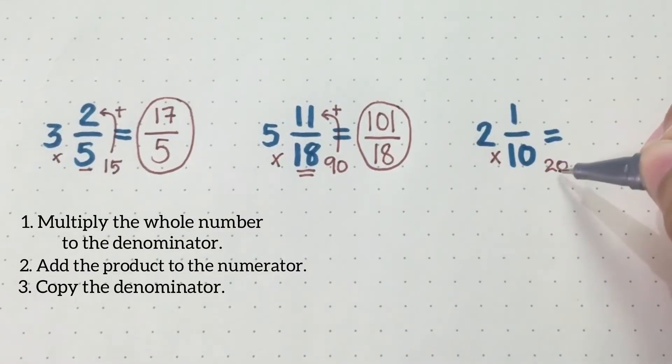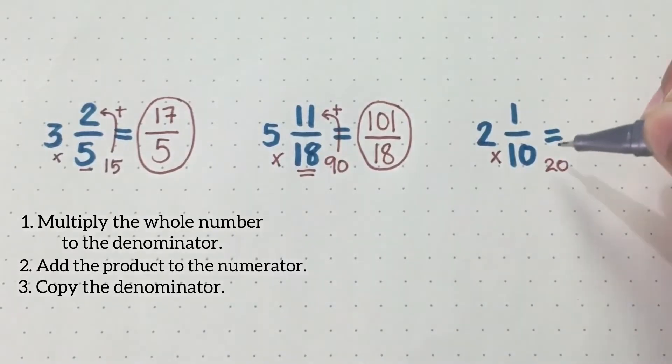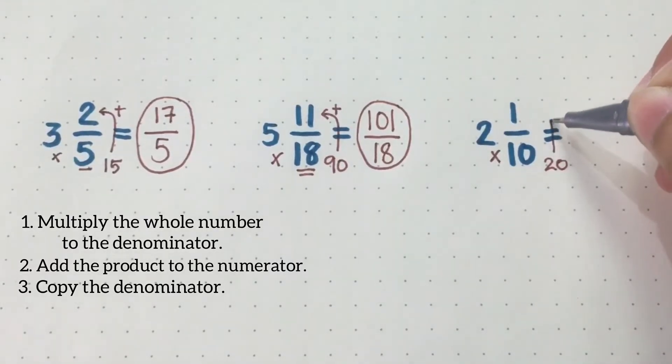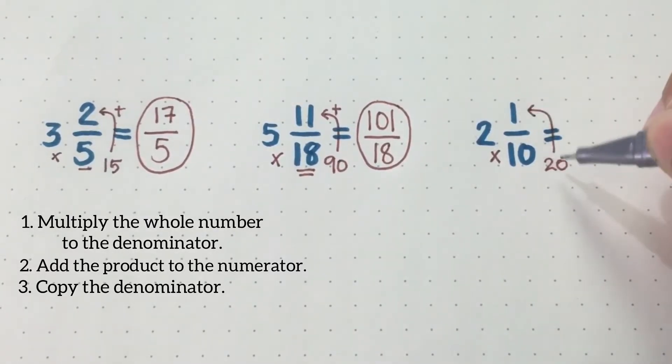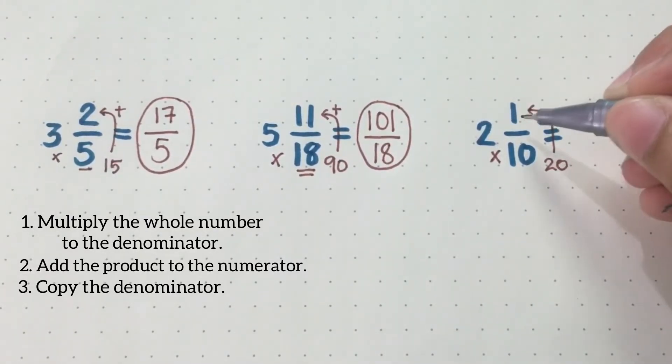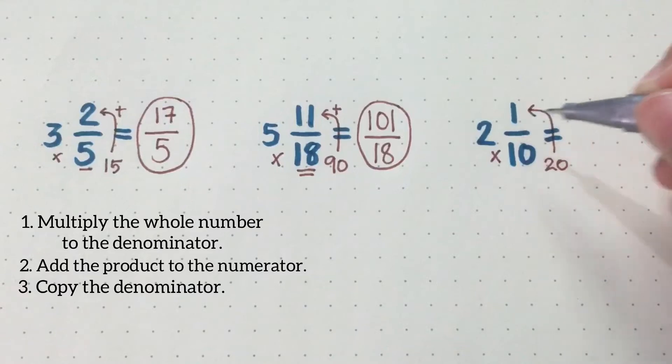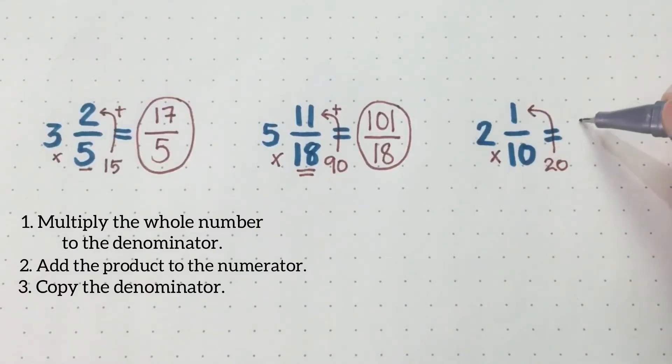After that, add 20 to the numerator — that's the second step. 20 plus 1, that will be 21.